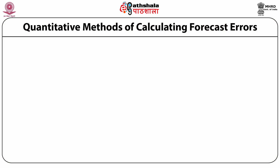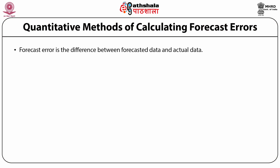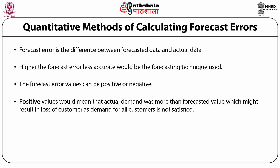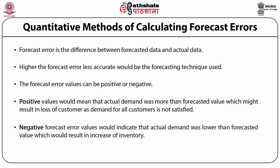Quantitative methods of calculating forecast errors. Forecast error is the difference between forecasted data and actual data. Higher the forecast error, less accurate would be the forecasting technique used. Forecast error values can be positive or negative. Positive values would mean that actual demand was more than the forecasted value, which might result in loss of customers as demand is not fully satisfied. Negative forecast error values would indicate that actual demand was lower than the forecasted value, which would result in an increase of inventory.